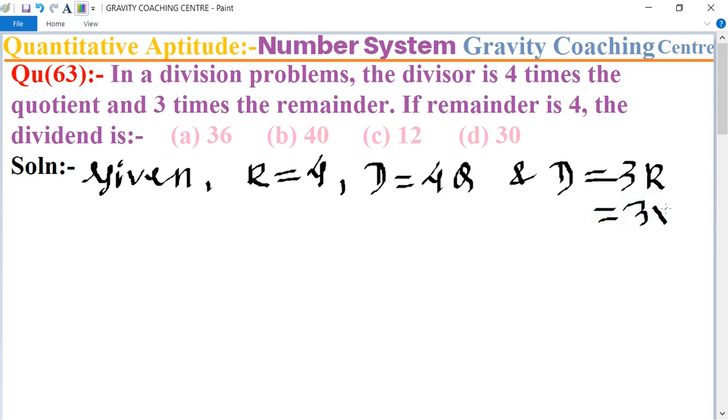R is given as 4, so 3 into 4 equals 12. Now we put here that divisor equals 12 equals 4Q.